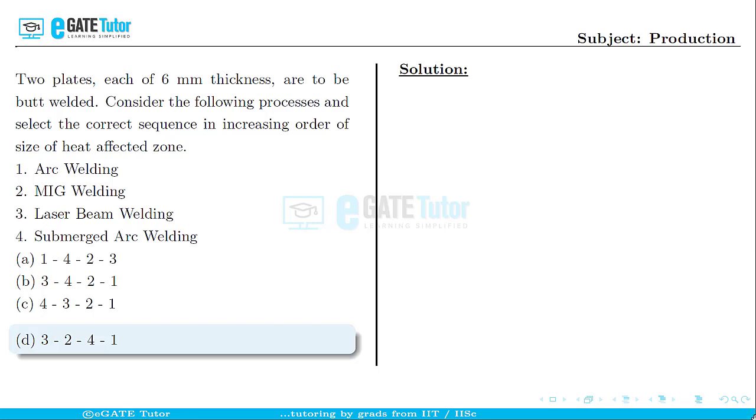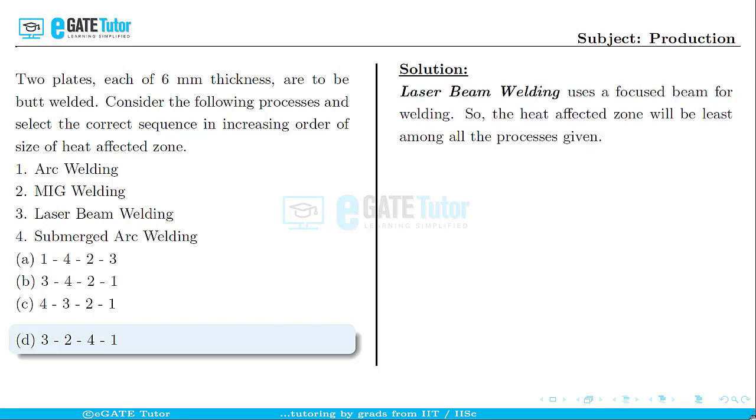Among these four processes, the first process which has the least heat affected zone will be laser beam welding because laser beam welding generally uses a focused beam for welding process. Also, since it uses a focused beam, it has high heat input so the total heat content will be low and thus heat affected zones will be small.